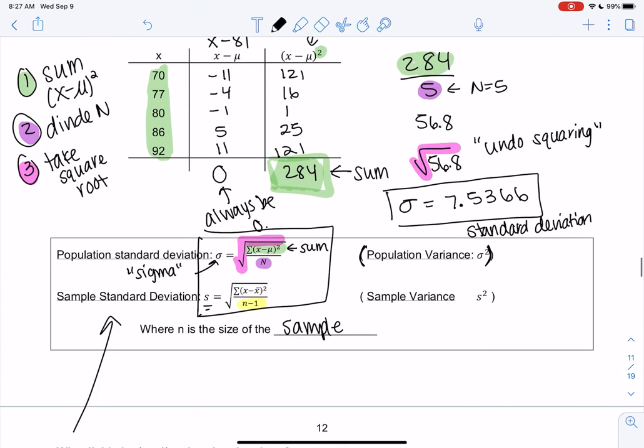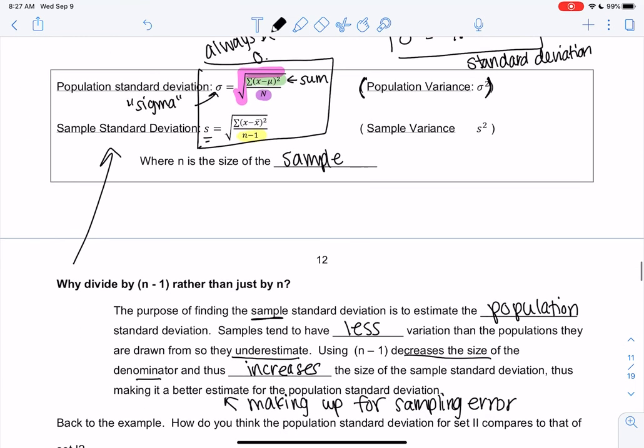So in this previous example, if it were a sample, I would have divided by 4 instead of 5. But we'll get into that in later videos. Alright, I'll see you in the next one.